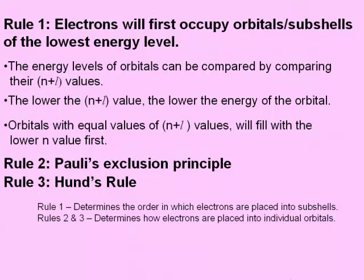So we have three rules which govern the way and the order in which electrons are filled into orbitals. These three rules make up the Aufbau principle.